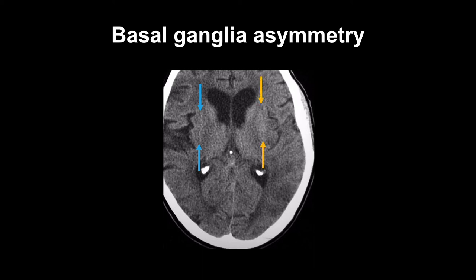Asymmetry in the basal ganglia is another early sign of a middle cerebral artery territory infarction, since the small arteries that supply blood to the basal ganglia arise from the proximal middle cerebral artery.